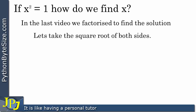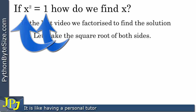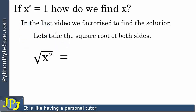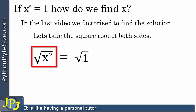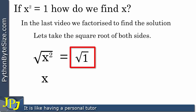What I'm going to do is take the square root of both sides. I get the square root of x squared, and that's going to equal the square root of the other side, which is the square root of 1. From previous work in this playlist, we know that the square root of x squared is x, and the square root of 1 is 1, because 1 times 1 is 1. So we can say that x is equal to 1.